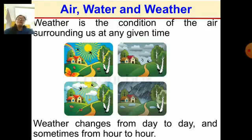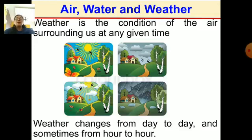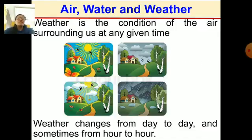Weather is the condition of the air surrounding us at any given time. It keeps on changing — it may be bright and sunny in the morning but suddenly turn dark and cloudy. Weather changes from day to day and sometimes from hour to hour. The revolution of the Earth causes the seasons, and according to the season, weather also keeps changing.